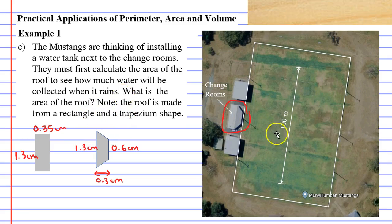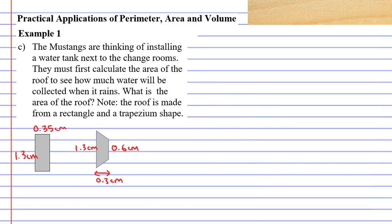I'm going to delete my picture so I've got some working out room. Whenever you find area, you need to convert your lengths into actual real life lengths first before you find the area. Remembering our scale, which is 1 to 1,612.9, we've got four different lengths: 0.35 cm, 1.3 cm, 0.6 cm, and 0.3 cm. Each one needs to be multiplied by 1,612.9 to figure out the real life lengths of this roof.